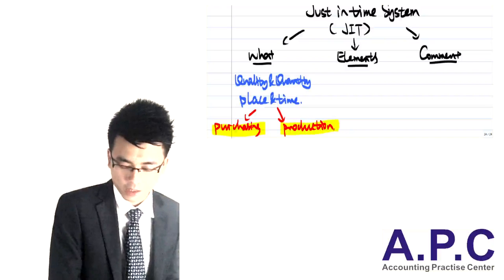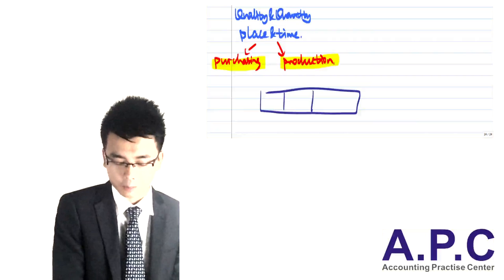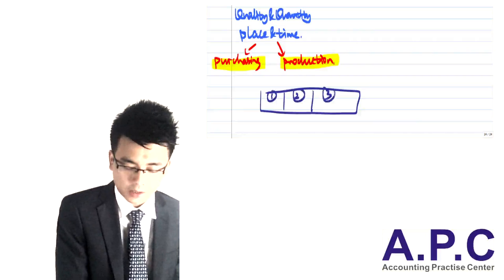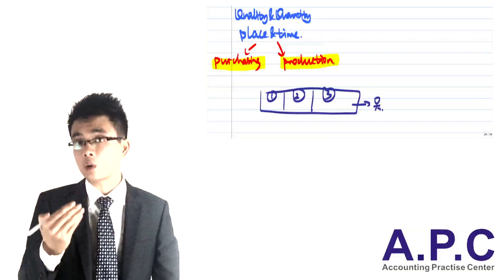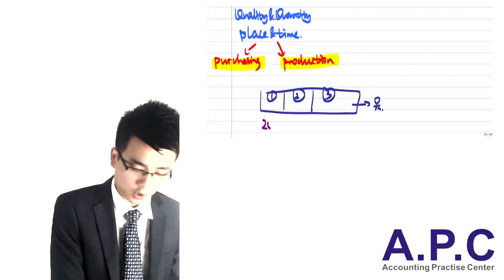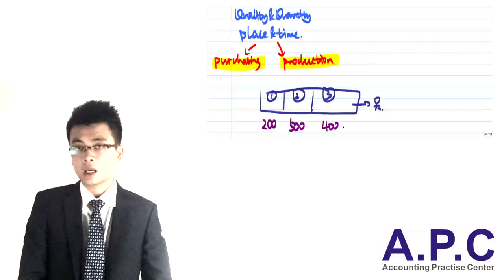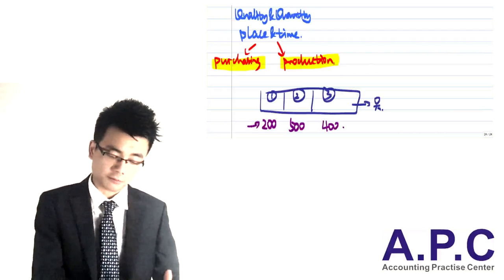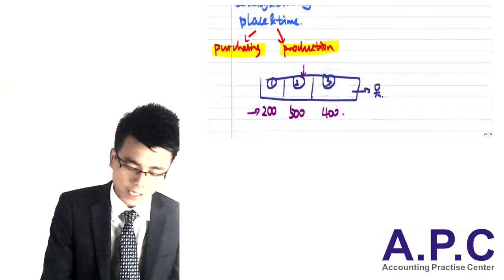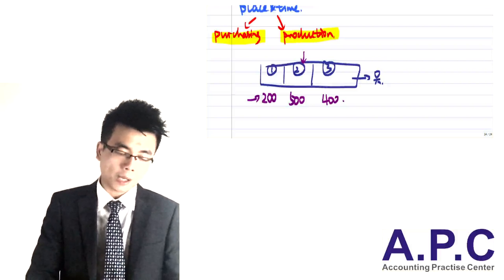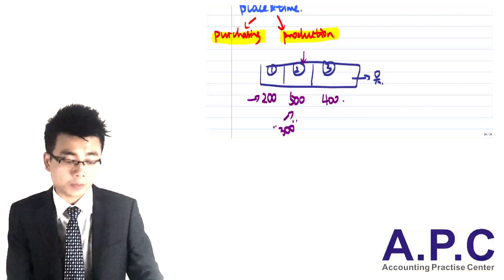When talking about production, within the factory there are lots of processes. Process number one is design, process number two is painting, and process number three is inspection and delivery of the final product to the customer. The capacity in each process will be quite different — for example, process one has a capacity of 200 units, process two is 500 units, and process three is 400 units. If you buy raw materials and pass 200 into process two, the maximum capacity of process two is 500, so there would be a spare capacity of 300 that has not been used — which is not efficient.